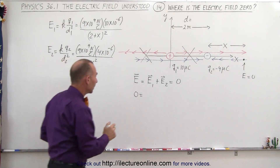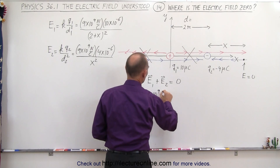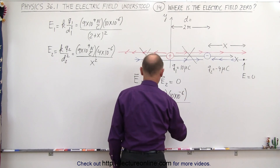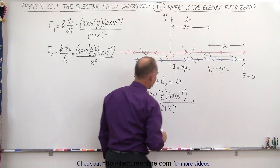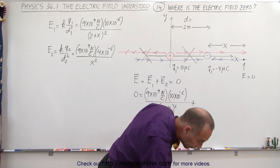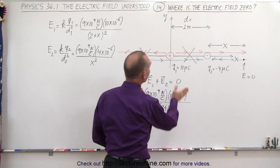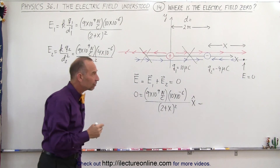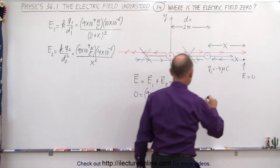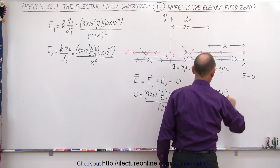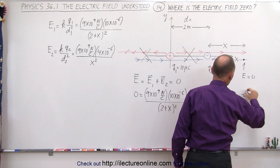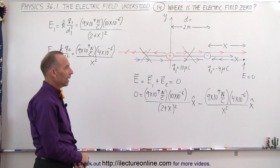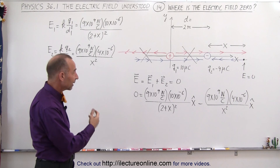Now we plug those in. E1 equals 9×10⁹ times 10×10⁻⁶ divided by (2+x)². We have to be careful because we're adding vector quantities. E1 is pointing to the right, so it's positive. Minus the E2 term, because the electric field caused by the negative charge points to the left: that's 9×10⁹ times 4×10⁻⁶ divided by x². We can immediately divide both sides by 9×10⁹, and those cancel out.